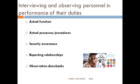One important technique is interviewing and observing personnel in the performance of their duties. The auditor will sit through an actual function to see how the auditee is working. The auditor will study actual processes and procedures, check for security awareness, and review reporting relationships. However, the auditor should be aware that an auditee, when feeling they are being audited, might change the way they work — so there could be drawbacks in observations as well.